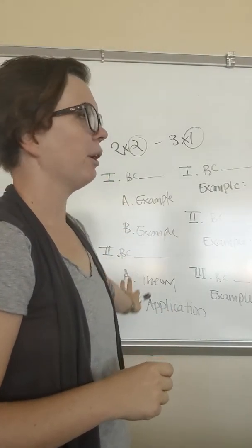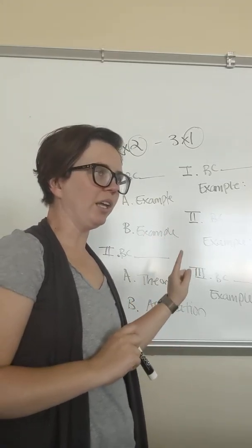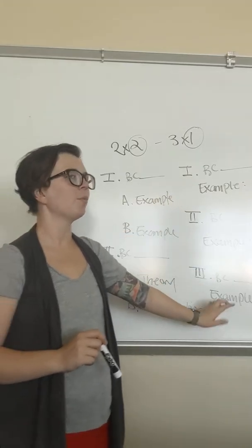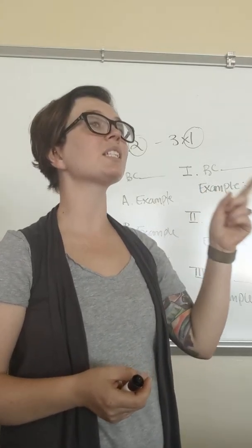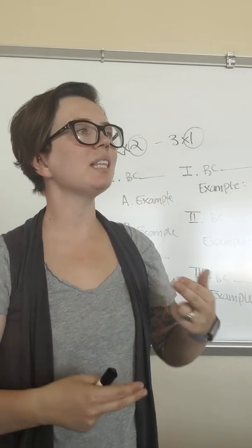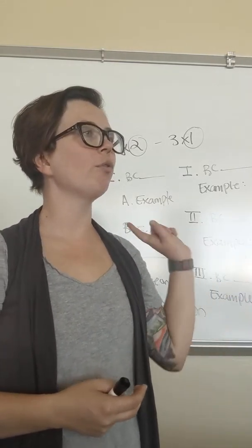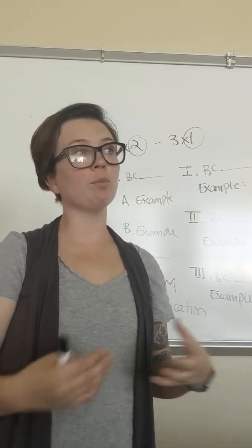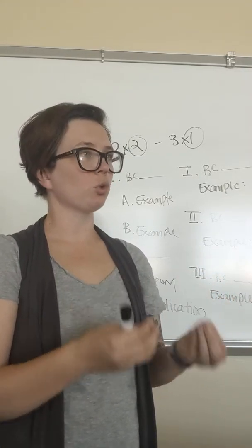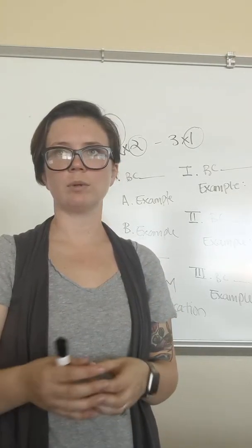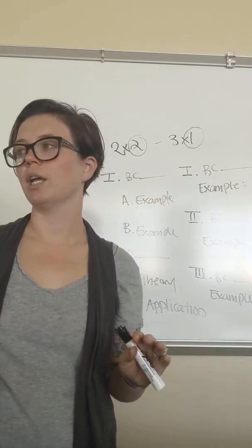So double example, theory application. We'll get more in depth on that when we start working on your impromptu journal. The three by one has three because statements, but only one example each. The difficulty is you are going to have to spend more time explaining the example, tying the example back to the because statement, and then tying it back to your overall thesis. In a two by two, because you have two points, you still do need to tie those back to the because statement and then to the thesis, but it's a lot shorter. It is quicker.